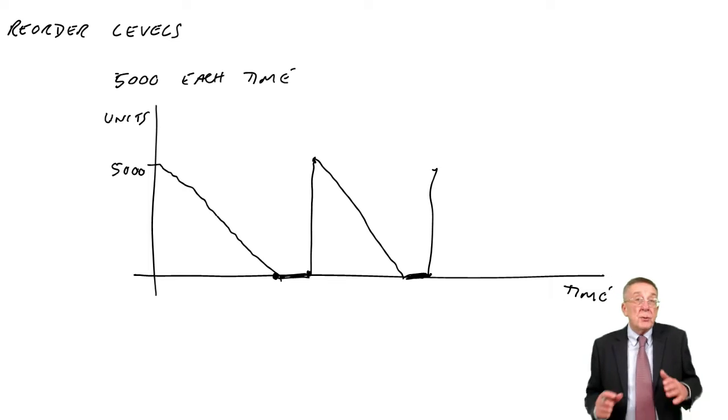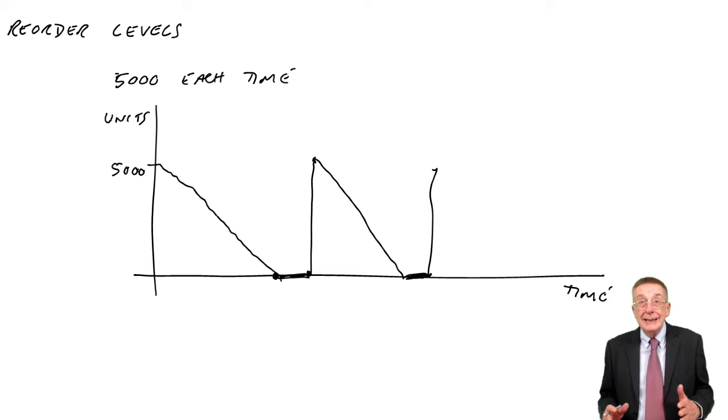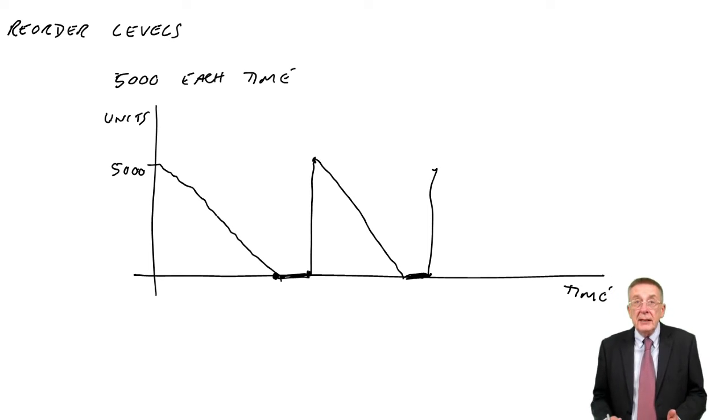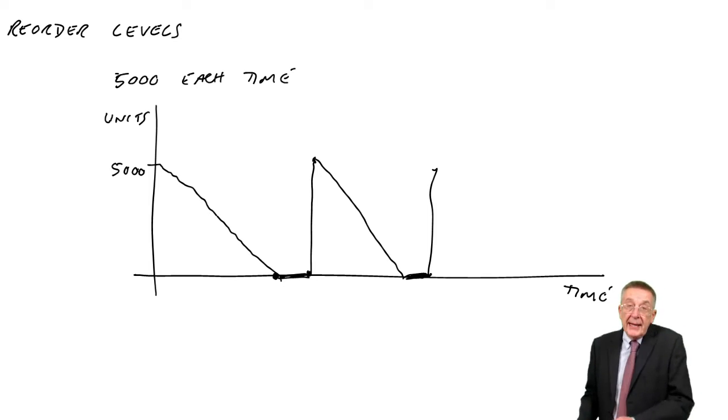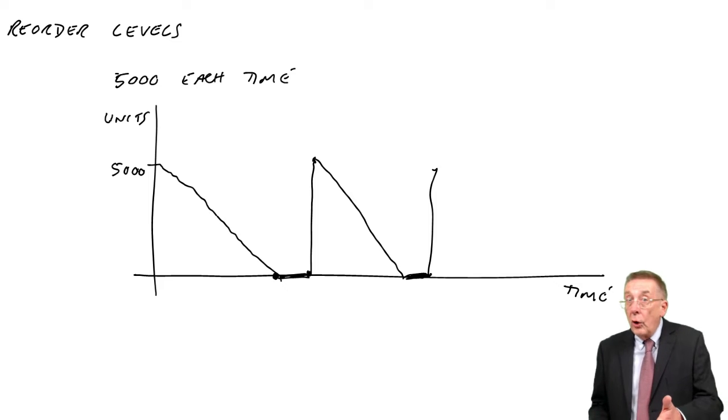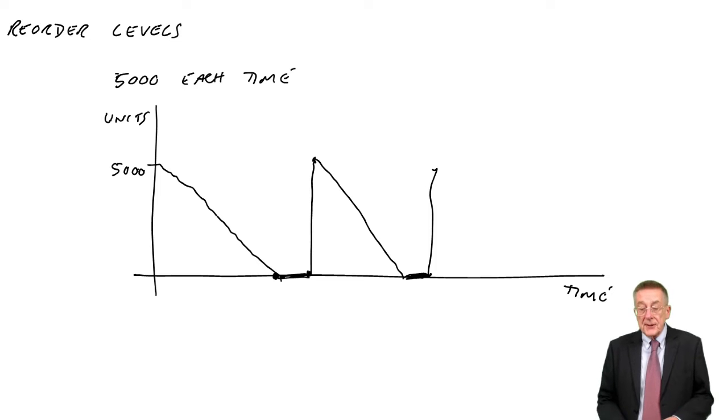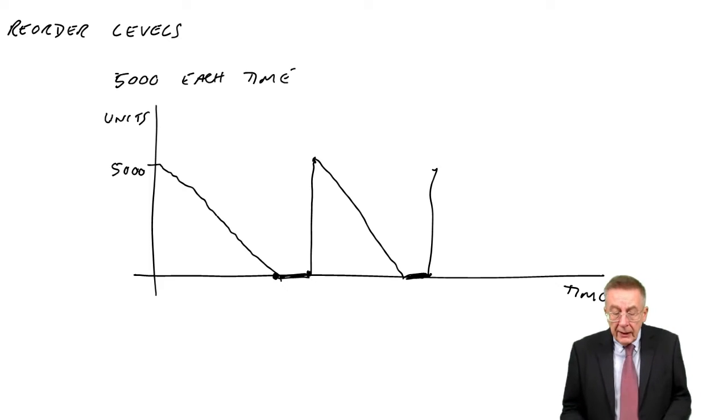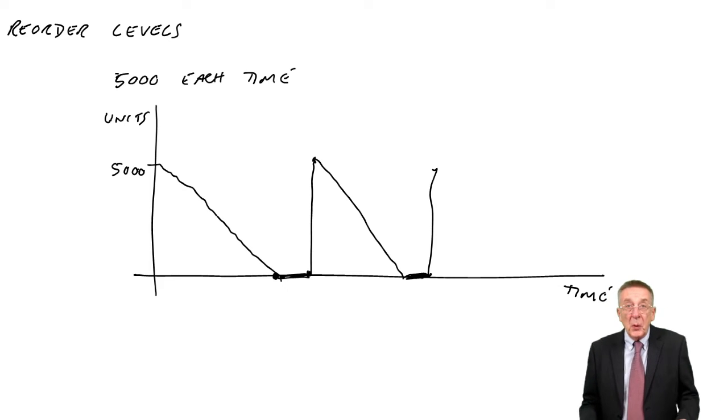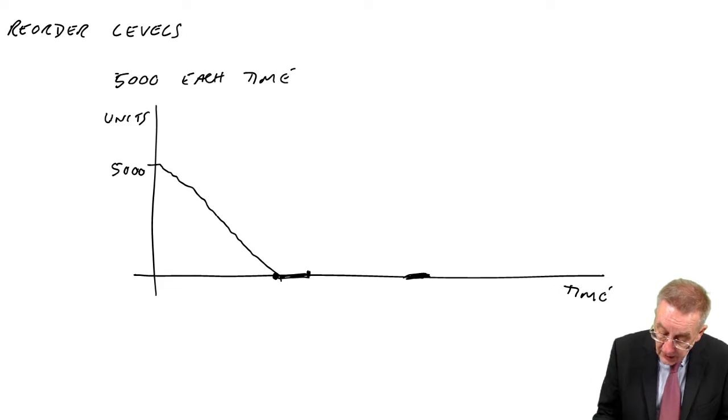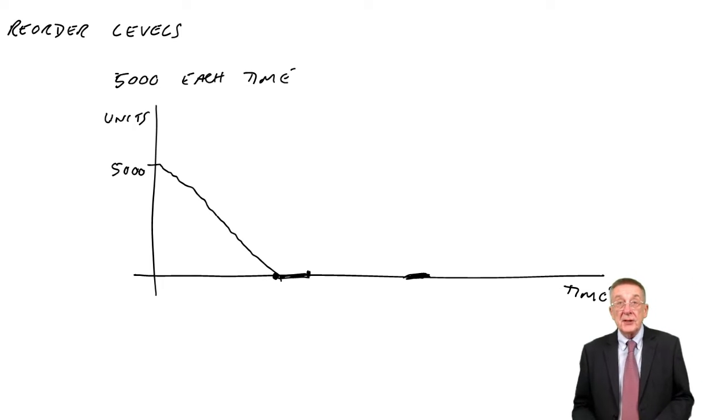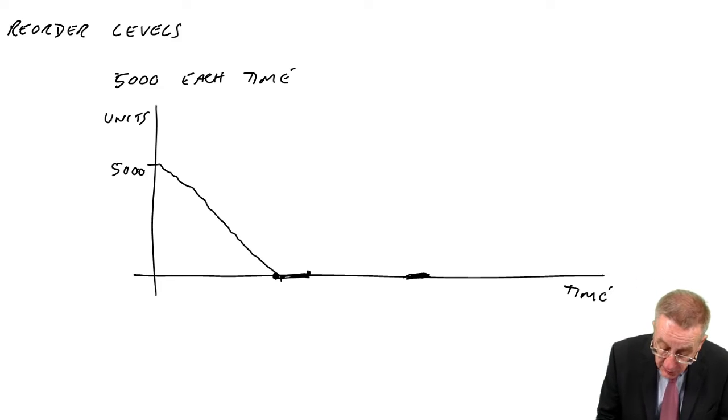And of course, during those three days when you've no inventory, customers are still wanting the goods, but you can't supply them. They may wait and come back three days later, or of course, they may go to another supplier and we lose the sales. And so, I think fairly sensibly, the way around that is if you know that it's going to take three days to deliver, you don't wait until the inventory falls to zero. You place the order a bit earlier.